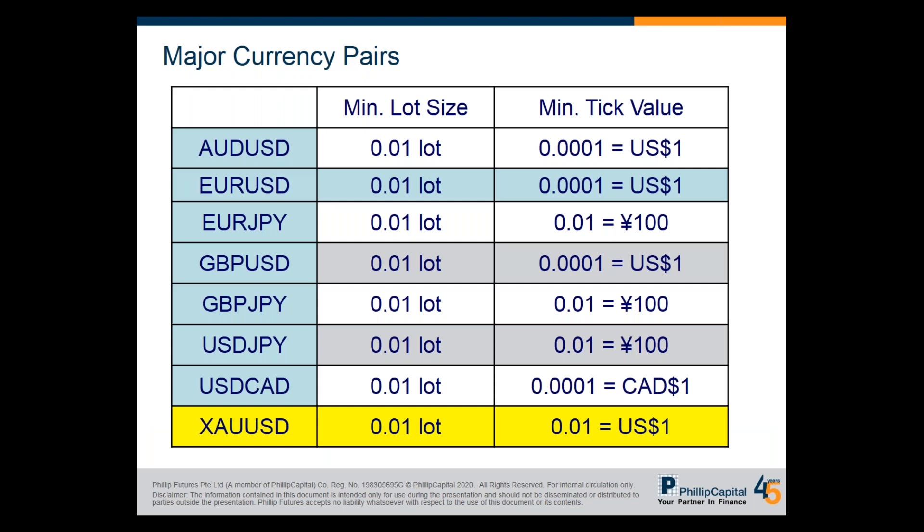Let's look at the currency pairs. For the major currency pairs, we have Aussie/USD, Euro/Dollar, Euro/JPY, Pound/Dollar, Pound/JPY, Dollar/JPY, and Dollar/CAD. Safe haven currencies include gold and Japanese yen, just like gold. For Euro/JPY, Pound/JPY, and Dollar/JPY, the pip goes to the second decimal place. All other currencies go to the fourth decimal place. Gold also goes to the second decimal place.